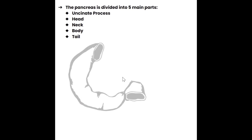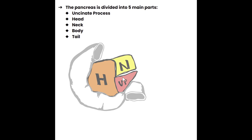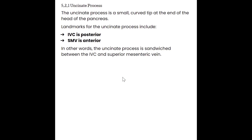We have our C-loop of the duodenum. The uncinate process is this little curly-Q tip of the pancreas wrapping around to the head that sits in the cradle of the C-loop. The neck is another small part next to the head, and then we have the body and tail. Let's take a look at each of these sections and talk about some of their landmarks.